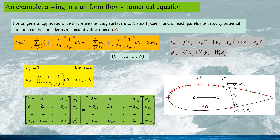In this equation, the potential function of the uniform flow can be regarded as the forcing term on the right-hand side. Obviously if the forcing term is zero, then the disturbance function would also be zero.